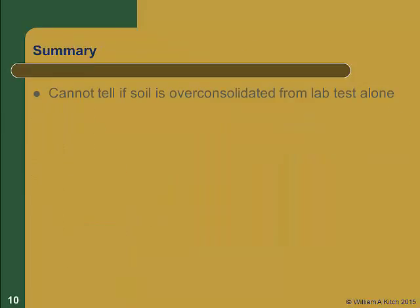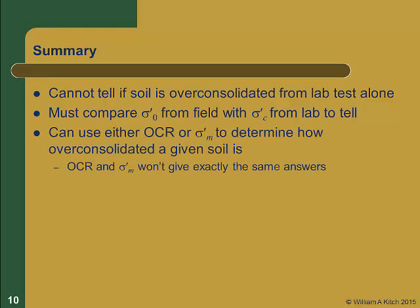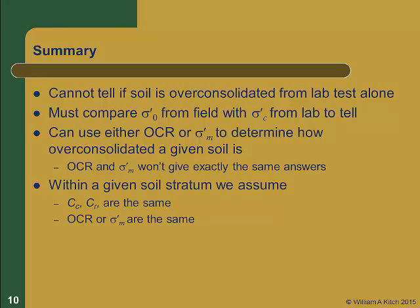To summarize: we cannot tell if a soil is over consolidated from laboratory tests alone, because all lab samples are over consolidated due to unloading during sampling and will always show a recompression curve. We must compare the initial vertical effective stress in the field sigma prime zero with sigma prime c developed in the lab. We can use either OCR or sigma prime M to describe how over consolidated a soil is — both are acceptable though they won't give exactly the same answers. Within a given soil stratum, we assume compressibility (C sub C and C sub R) and degree of over consolidation (OCR or sigma prime M) are the same, but E naught, sigma prime zero, and sigma prime c will all differ at different locations within the stratum.